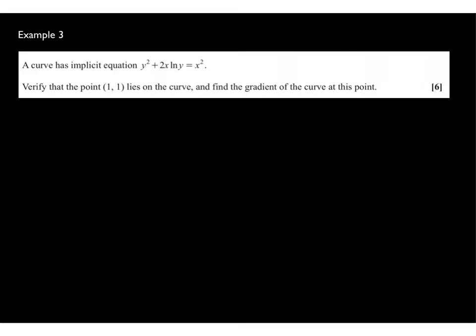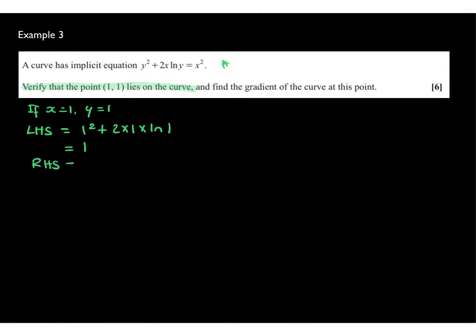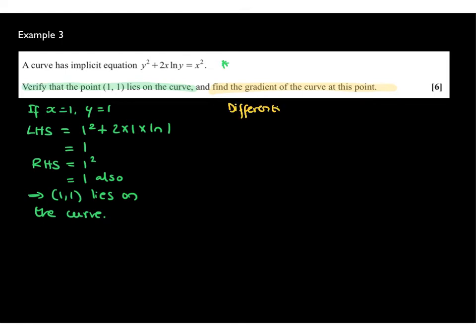Now a series of questions involving implicit differentiation. A curve is defined implicitly. Verify that the point (1, 1) lies on the curve. Verification is straightforward: with x equals 1 and y equals 1, the left-hand side equals 1 squared plus 2 times 1 times ln(1). Since ln(1) equals 0, the left-hand side equals 1. The right-hand side is 1 squared equals 1, confirming that (1, 1) lies on the curve. To find the gradient we need to differentiate.